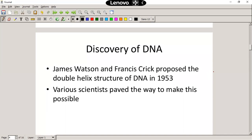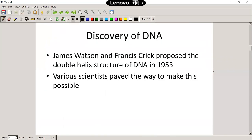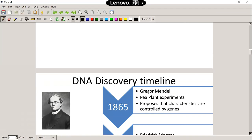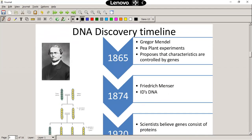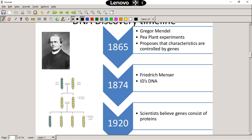Let's get into the discovery of DNA. James Watson and Francis Crick proposed the double helix structure of DNA in 1953. But there were various other scientists whose previous research allowed them to know what DNA should look like — they stood on the shoulders of giants. One of those first people is Gregor Mendel, who we'll discuss in more detail later this year when we do Mendelian genetics.